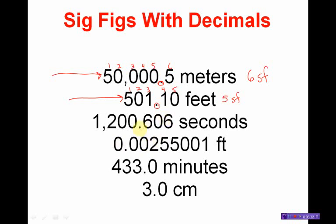I see a decimal point. A decimal point indicates I'm coming in from the left. I draw my arrow — there are no zeros, so I stop right at the 1. I have 1, 2, 3, 4, 5, 6, 7. There are seven significant figures.